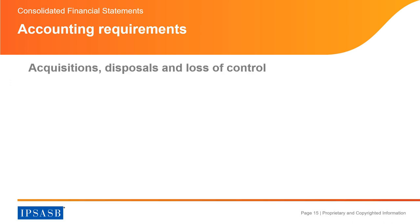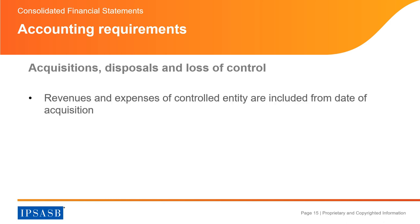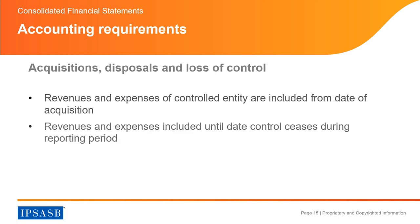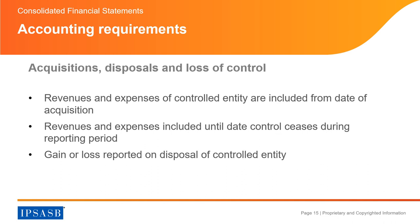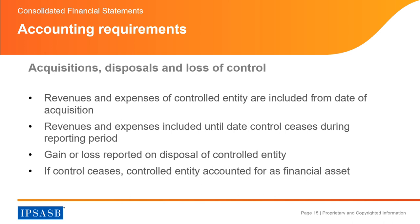Let's see the accounting requirements for acquisitions, disposals, and loss of control. Revenues and expenses of a controlled entity are included from the date of acquisition. Revenues and expenses are included until the date control ceases during the reporting period. A gain or loss is reported on disposal of a controlled entity. If control ceases, the controlled entity is accounted for as a financial asset.